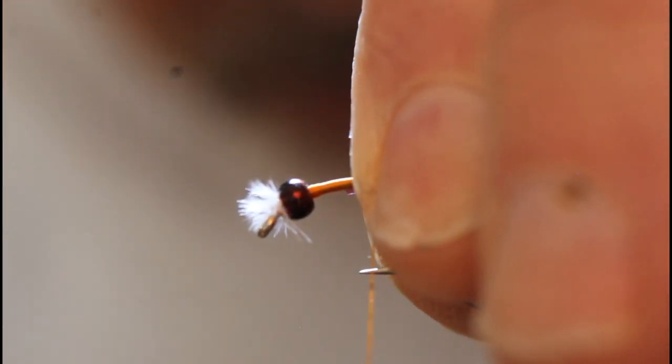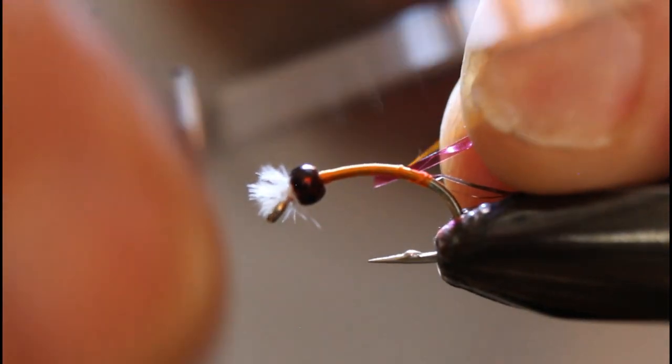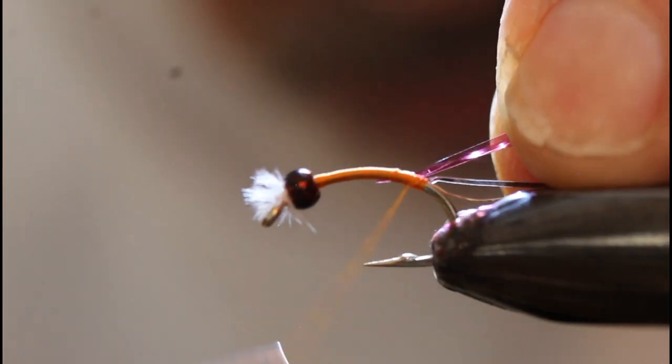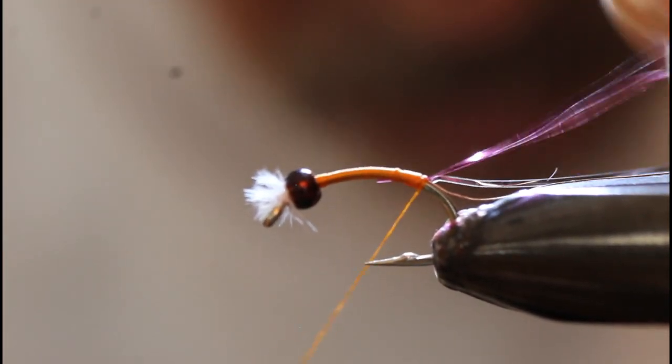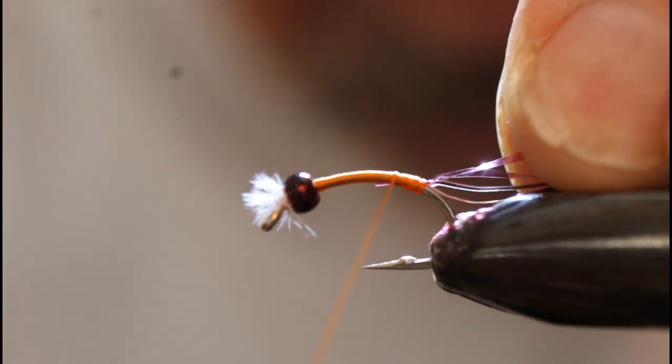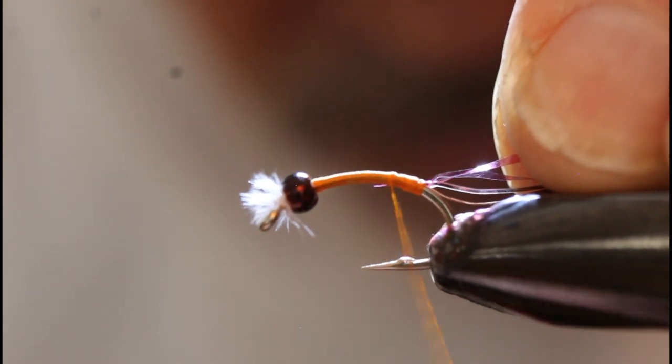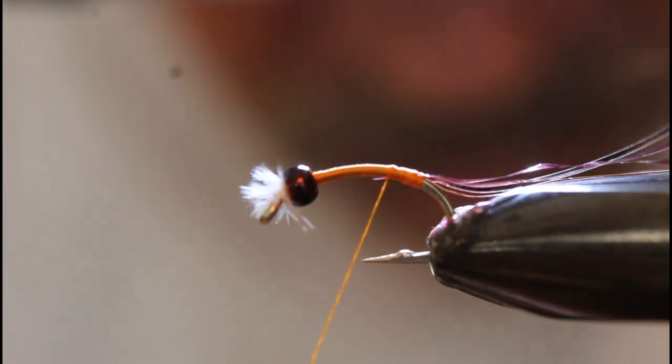I want to get just the right amount of tag in there, so I'm just adjusting the length. Now I give that a pinch and wrap, pull it down and get the thread down to the wire and the window tint, and get it right down there into the bend of the hook.